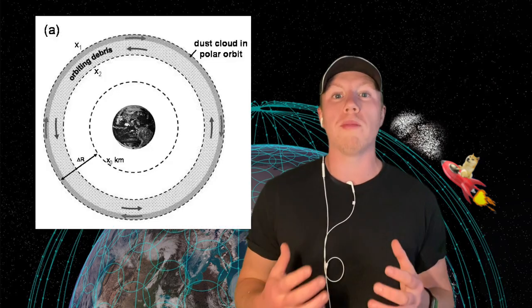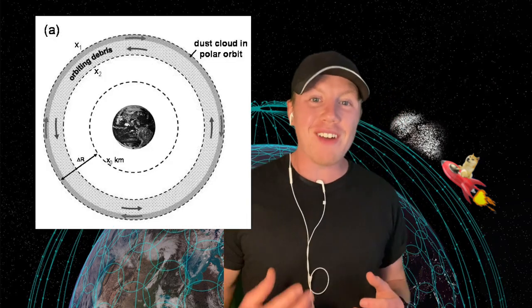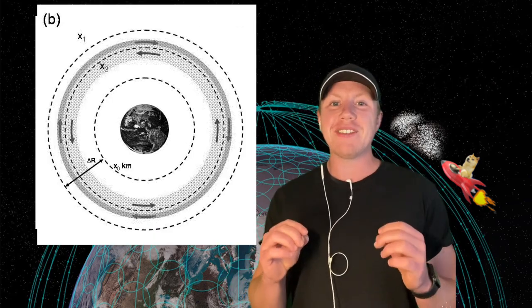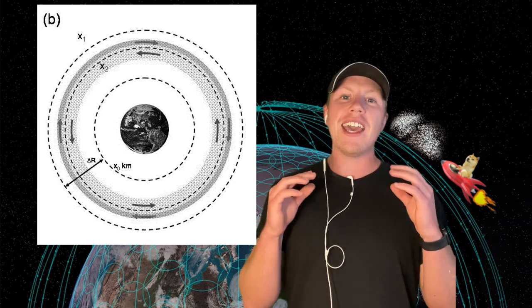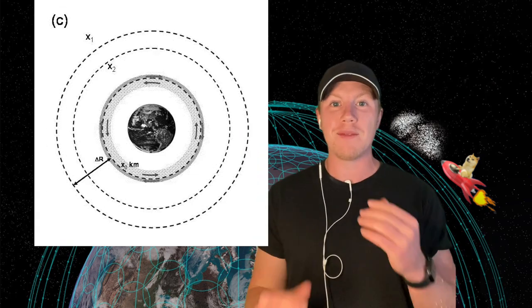And by creating this targeted atmosphere, you can reduce the deorbit time by over 1000x. Meaning that instead of taking 1000 years at 700 kilometers to deorbit, it could only take one year. So that's nuts. Like that's crazy.